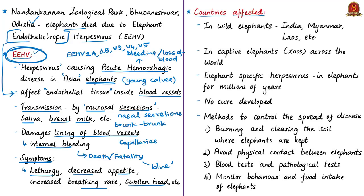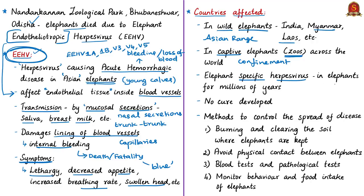This is a worldwide disease, but lethal cases have been reported among wild elephants in Asian range countries including Myanmar, Laos, Thailand, Indonesia, Malaysia, India and Cambodia. Many zoos across the world where elephants are held in captivity have also observed this virus attacking elephants in other parts of the world.